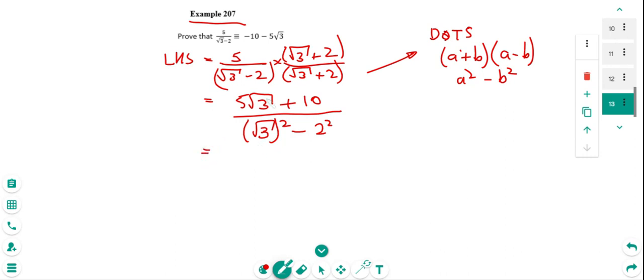So if I tidy that up again, I'm just going to change the top line into the order that the top line is in the right hand side of the thing we're trying to prove. So 10 plus 5 root 3. And then if we work this out, root 3 squared is 3, take away 2 squared is 4. So that's going to be 10 plus 5 root 3 over minus 1.